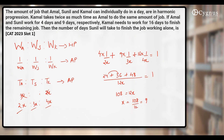The question asks how many days Sunil will take to finish the job working alone. Sunil's time is 3x, and since x = 9, the answer is 3 × 9 = 27 days.